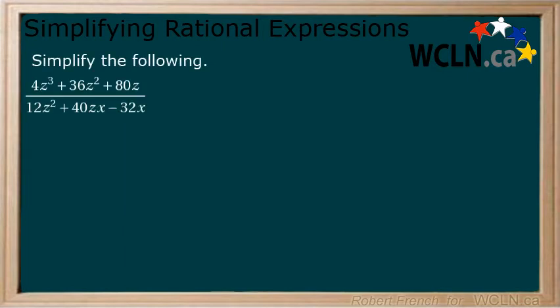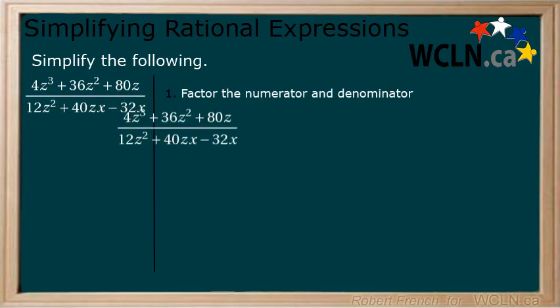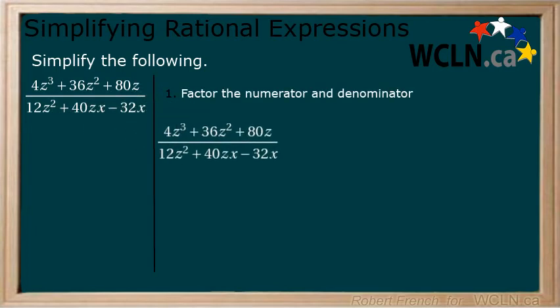Here we will simplify a more complicated rational expression, which means that we may have to use multiple factoring methods on each polynomial. Step 1: Factor both the numerator and the denominator. The first thing we always want to check for is if there are any common factors. We can factor out a 4z from the numerator and a 4z from the denominator.